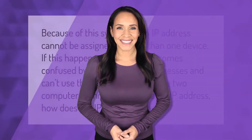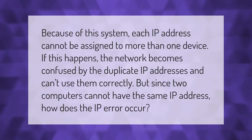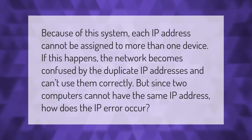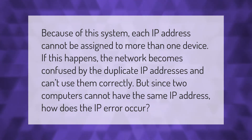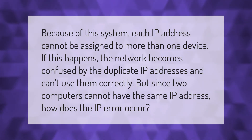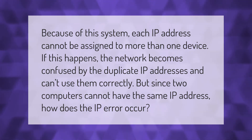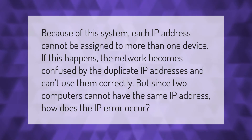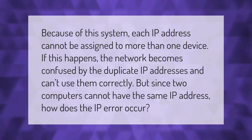Because of this system, each IP address cannot be assigned to more than one device. If this happens, the network becomes confused by the duplicate IP addresses and can't use them correctly. But since two computers cannot have the same IP address, how does an IP error occur?